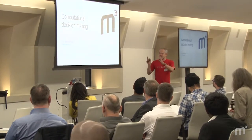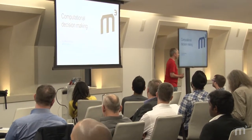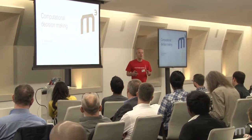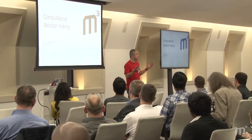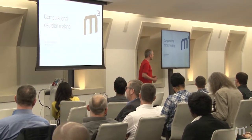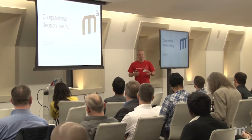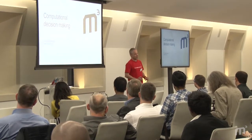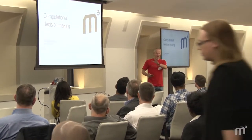I phrased this talk 'computational decision making' because I try to avoid using the term 'machine learning', as it usually raises expectations of what's going to happen. And as soon as somebody mentions machine learning, it's not far that somebody else mentions artificial intelligence, which I really don't like as a term. So I try to keep that out as much as possible.